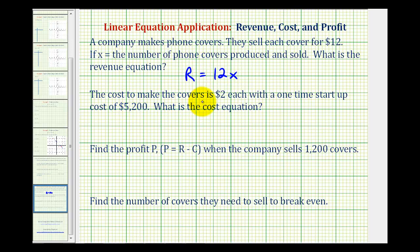The cost to make the covers is two dollars each, with a one-time startup cost of five thousand, two hundred dollars. So now we want to know what the cost equation is. We can see there are two components to the cost: there's a fixed cost of five thousand, two hundred dollars that's not going to change, and then a variable cost based upon the number of phone covers produced at two dollars each.